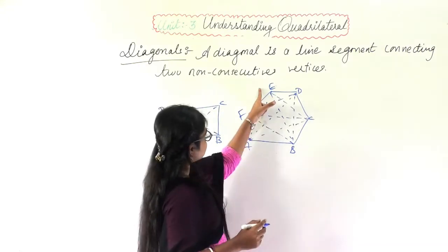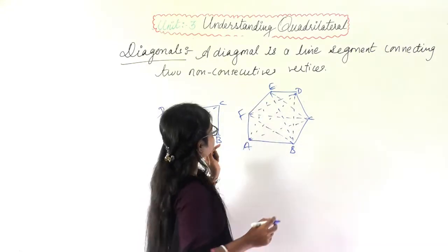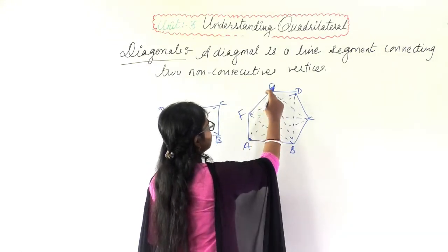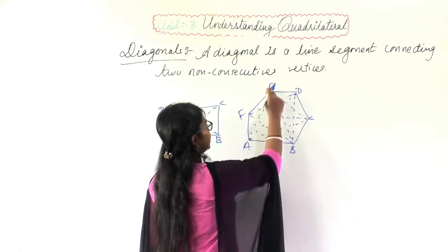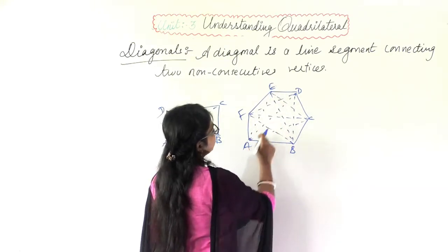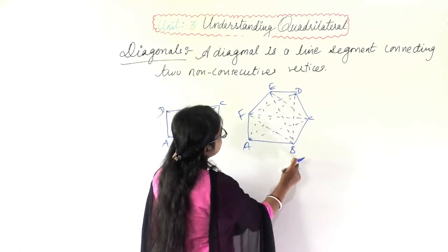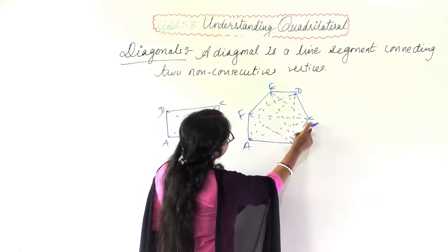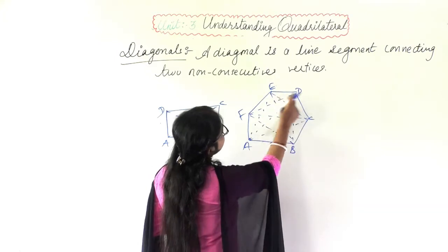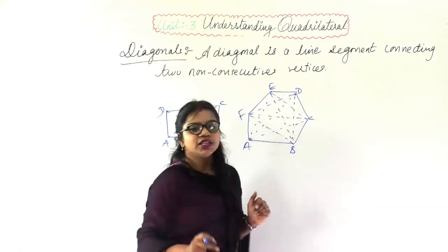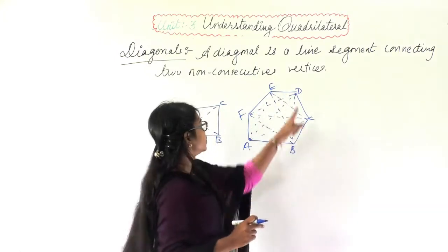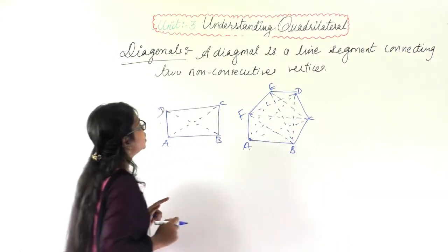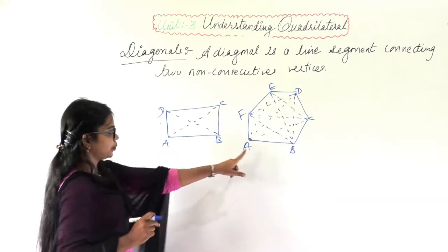Again from point E, EF is already connected. EA and EC are also connected, and ED is also connected. So these are all the diagonals of the polygon.